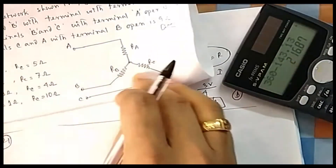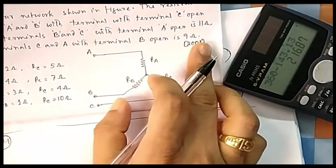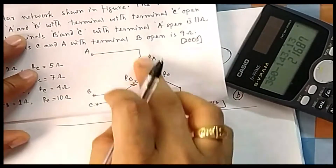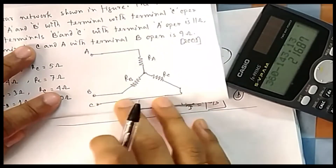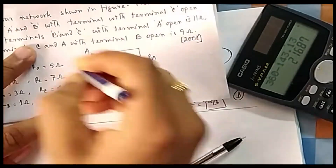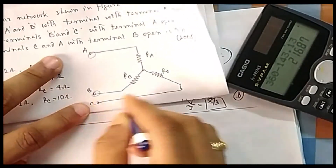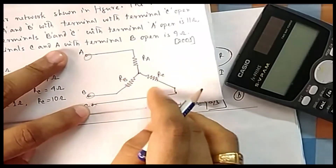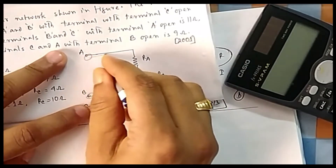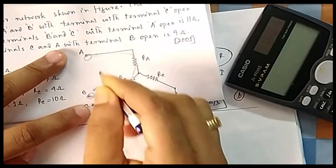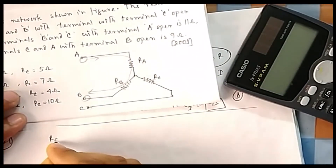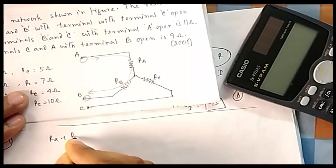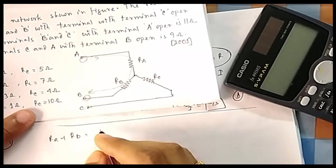The first question: find the resistance between terminals A and B with terminal C open. If C is open, no current is flowing through that branch. So following the closed path, the total resistance equals Ra + Rb, which is given as 6.